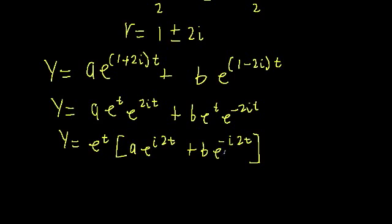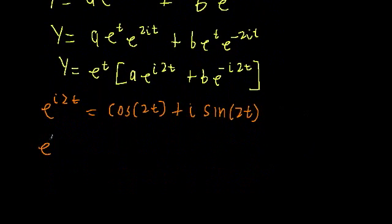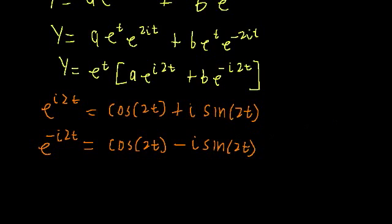Here we have two exponentials with imaginary exponents. There should be a red flag raising - when we have an exponential function with an imaginary exponent, we can use Euler's formula. What Euler's formula says in this context is that e to the i times 2t equals cosine of 2t plus i times sine of 2t. It also says that e to the minus i·2t equals cosine of 2t minus i times sine of 2t.